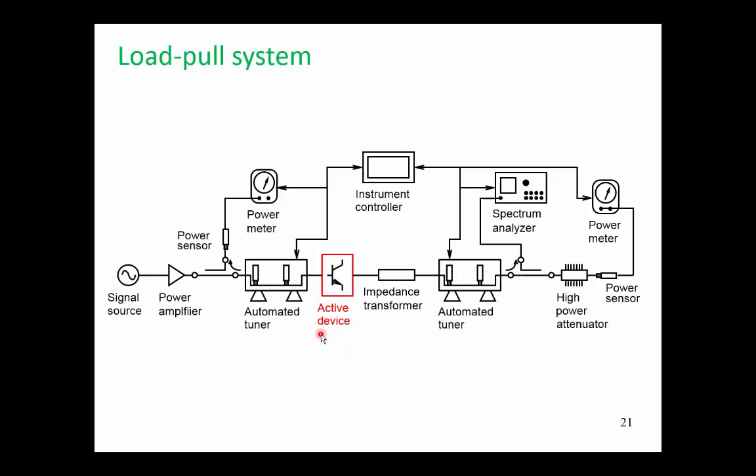What we have in our load pull system is first of all our active device is right in the core. And at the input of our active device, we have a variable input matching network. And this variable input matching network is called an automated tuner. So it is computer controlled, or at microwave frequencies we often talk about an instrument controller. That's the historical name we've used for a computer controller. And the automated tuner has a number of variable elements. Typically we draw this with what looks like stubs that can be adjusted. Better to use slugs that can be moved up and down a coaxial line. These slugs could be around the center conductor of the coaxial line, or in fact we may take the coaxial line and open it up into a slab line. What we insert looks like a piece of metal that's between the planes of the slab line.